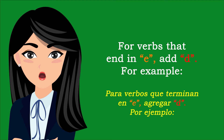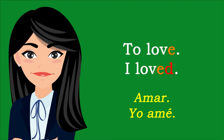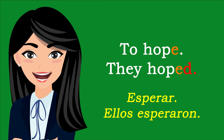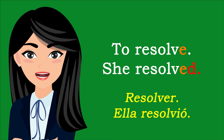For verbs that end in E, just add D. For example: To love — I loved. To hope — They hoped. To resolve — She resolved.